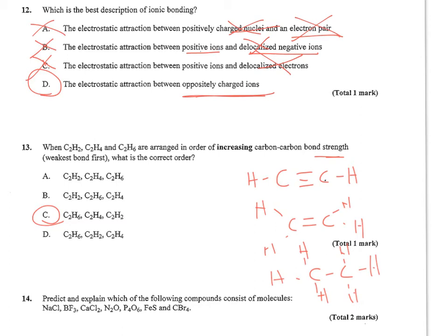Number 13, when C2H2, C2H4, and C2H6 are arranged in order of increasing carbon-carbon bond strength with the weakest first, you have to realize that C2H2 has a triple bond, whereas C2H4 has a double bond, and C2H6 has all single bonds or is saturated. So that is the weakest one with the single bond, then the double, then the triple. So letter C fits.